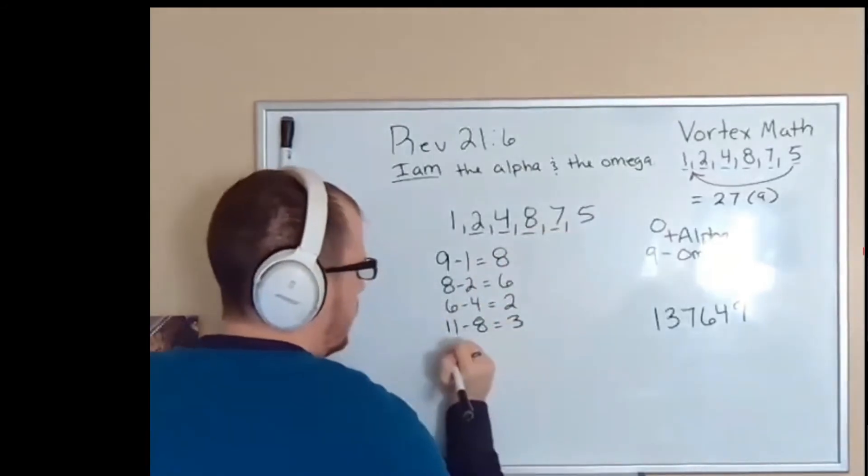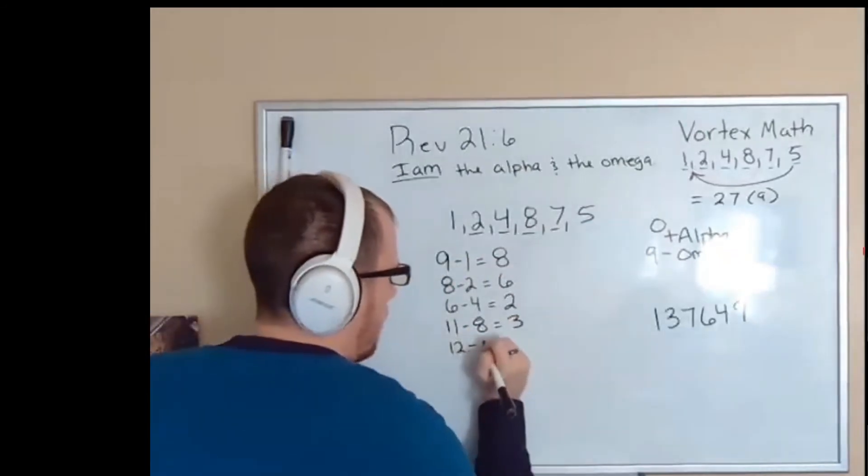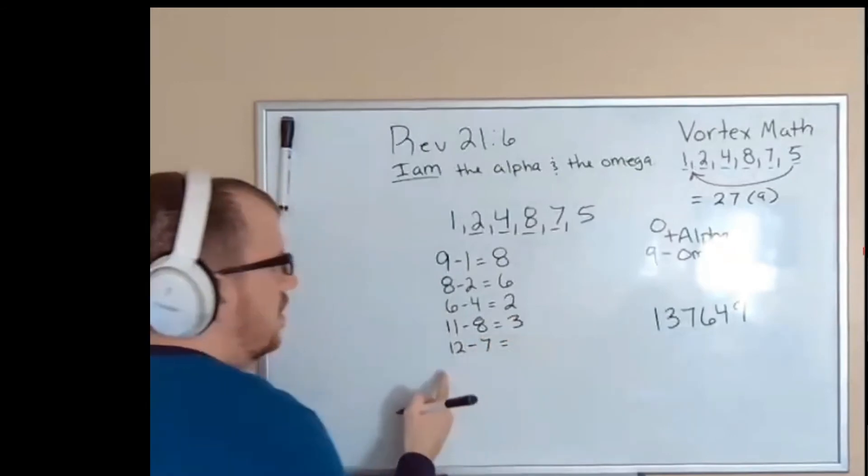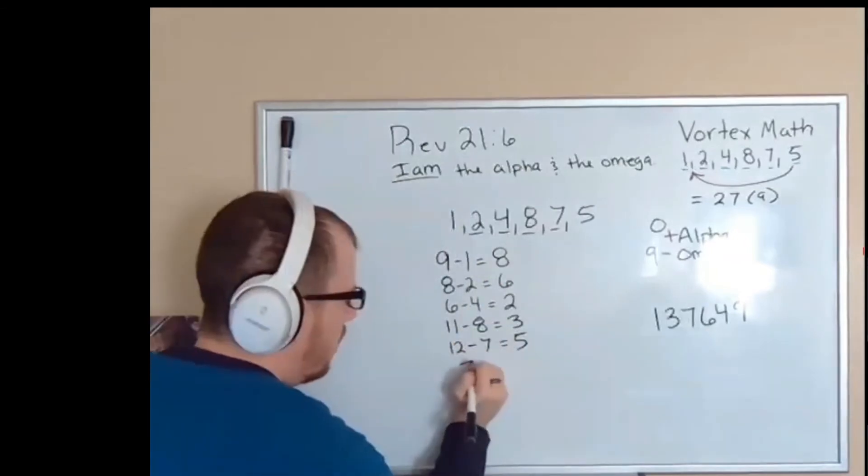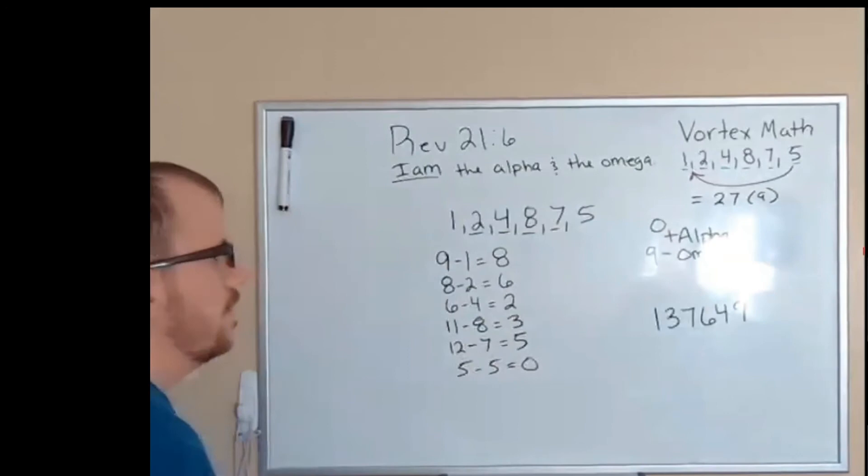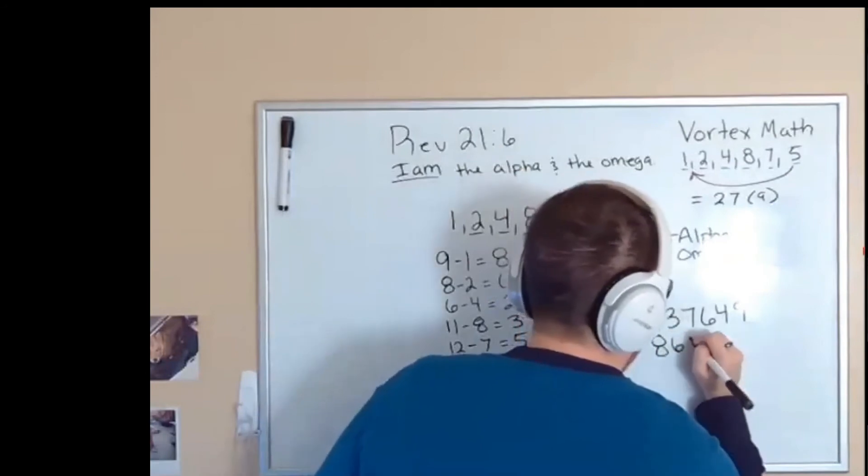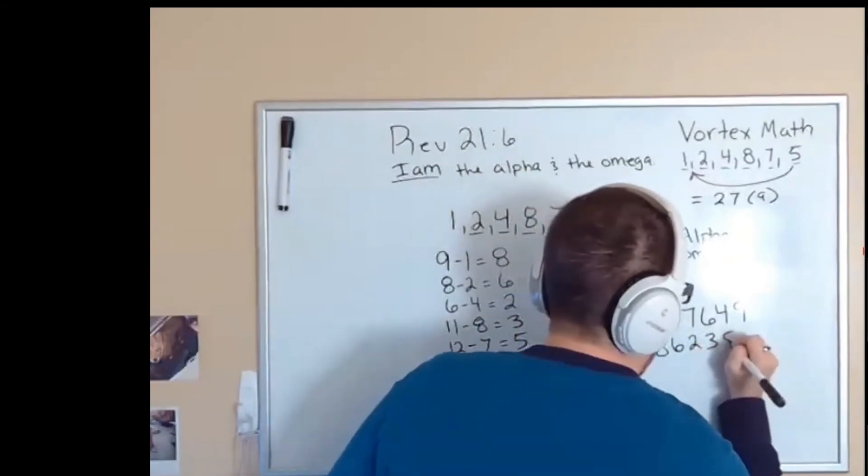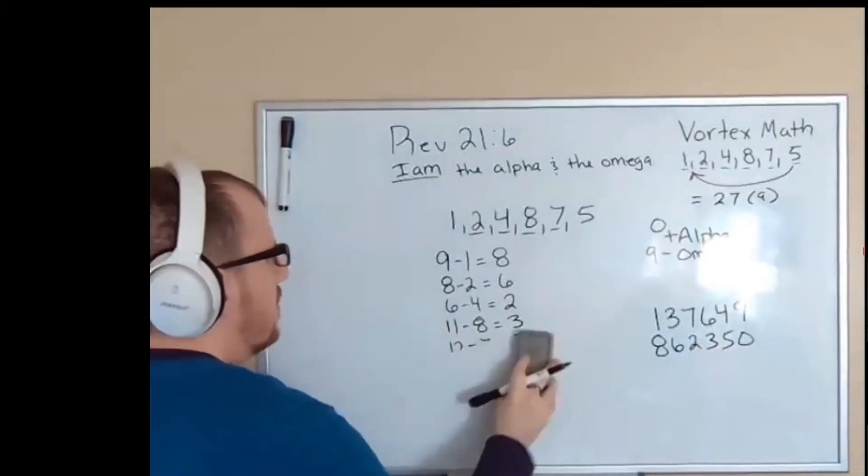We're going to do the exact same thing with three. We're going to turn it into 12 because we need to have a positive number. So 12 minus seven is going to be five. And then five minus five is going to be zero. You're probably wondering why I'm showing you this. And now I'm going to show you. So our omega is going to be eight, six, two, three, five, zero. And if you haven't seen it yet, you're about to.